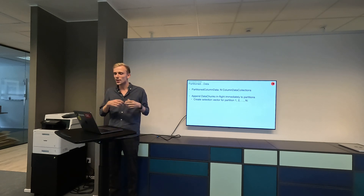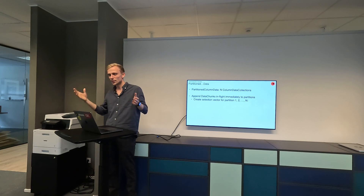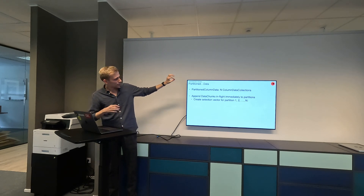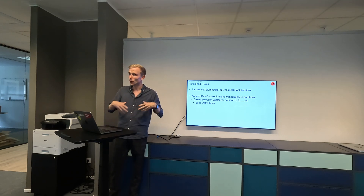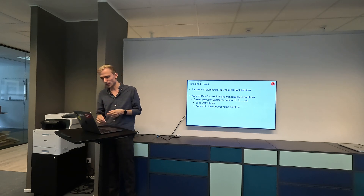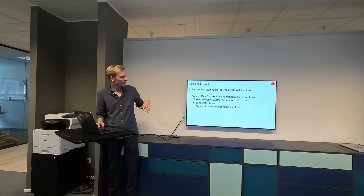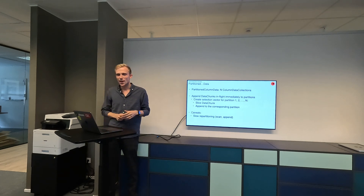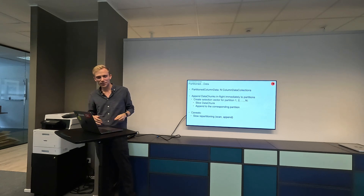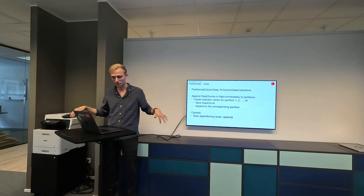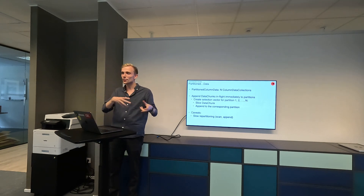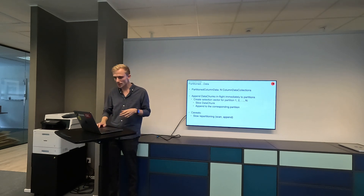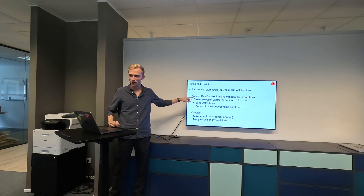The partitioned version of the column data is just a collection of column data collections. We can append data chunks — our batches — immediately to these partitions using something called a selection vector, which selects rows from a batch. Our batch size is 2048. We create a selection vector for each partition, use it to slice the chunk, selecting the rows belonging to that partition, and then append that to the corresponding column data collection. This works reasonably well, but there are some caveats. If you want to repartition — say you didn't pick enough partitions — you need to scan and re-append, which with many partitions means doing slice-append many, many times.